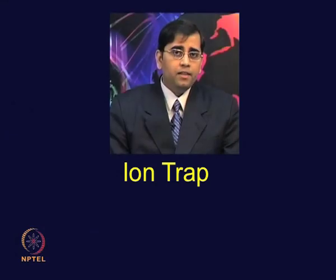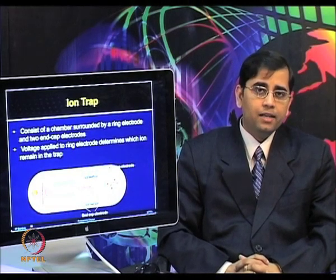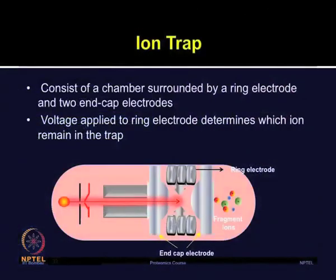Another important mass analyzer is the ion trap. The ion trap traps ions using electrical fields and measures mass by selectively ejecting them to a detector. It consists of a chamber surrounded by a ring electrode and two end cap electrodes. The voltage applied to the ring electrode determines which ions remain inside the trap. Ions above a threshold m/z ratio remain inside the trap and others are ejected through a small hole. The ion trap can theoretically provide MSn analysis and also serve as a mass filter.